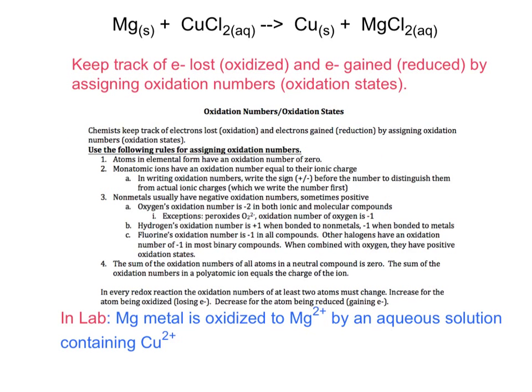In lab, in our single replacement laboratory, we reacted magnesium metal with copper to chloride, an aqueous solution of it, and we created solid copper and an aqueous solution of magnesium chloride. During this reaction, it's important that we keep track of how electrons are being transferred between reactants and forming our products. We do that with something called oxidation numbers.